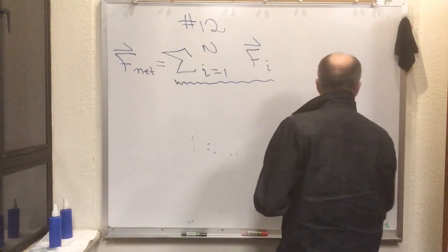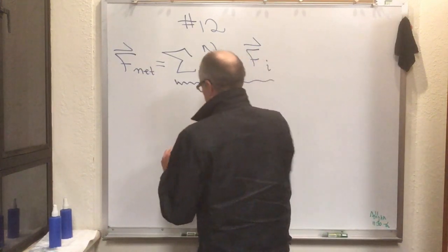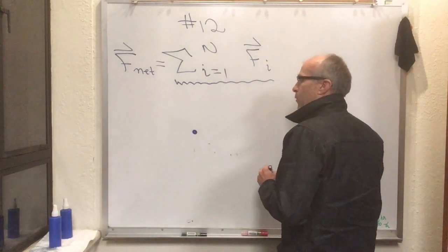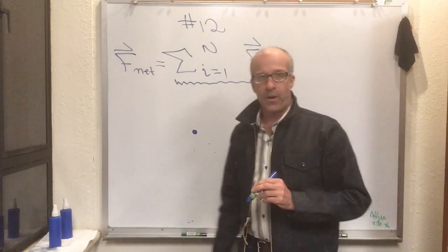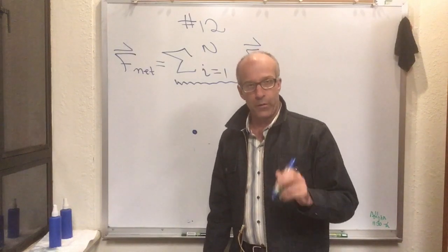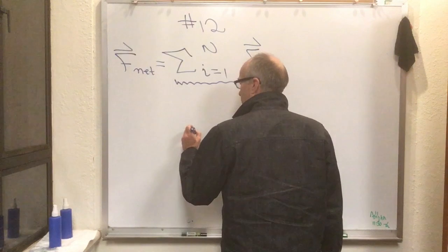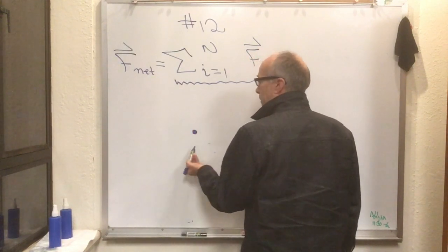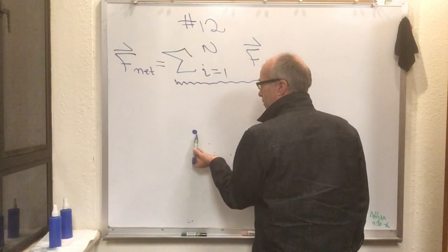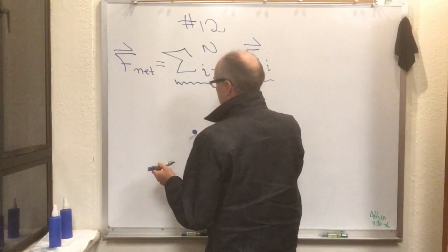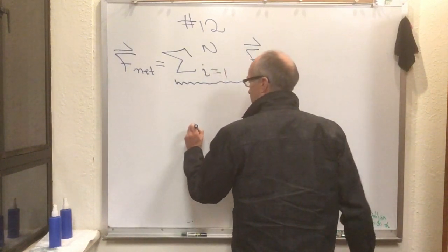Whenever we have a point particle, we draw it and then we draw all the forces on the particle with the tail of the force vector at the particle. So even though my palm was pressing up on the bottom and it might seem kind of natural to put my palm press like that, the way we draw the diagrams, and this is a convention, the way we draw the diagram is we actually put Brian's palm press